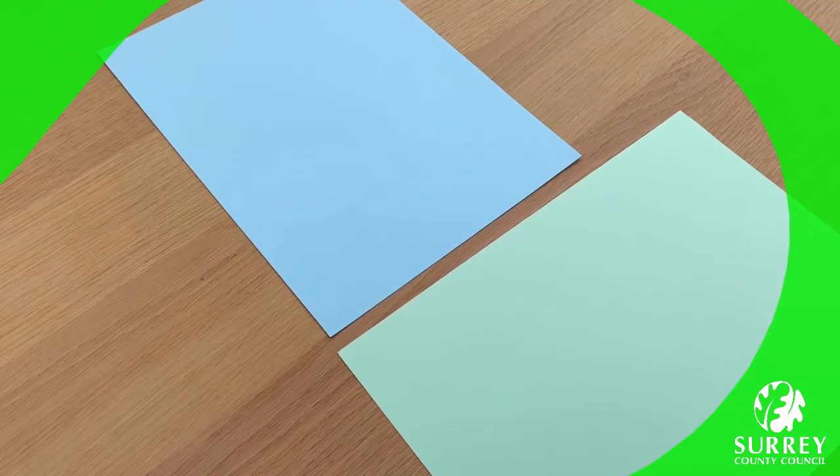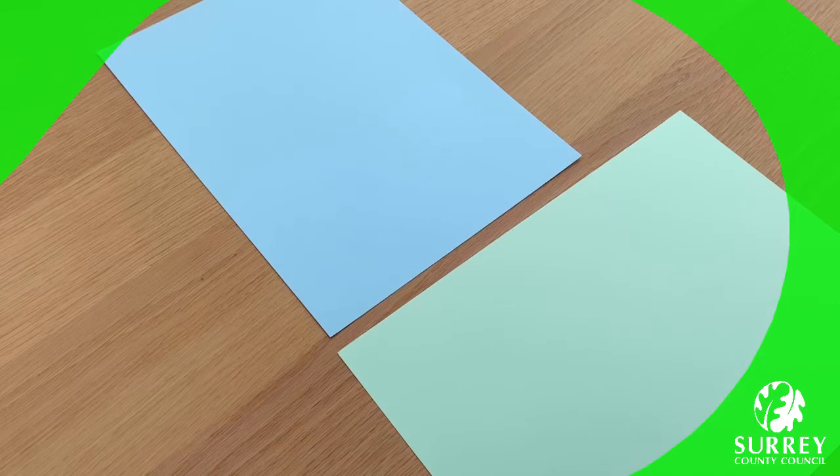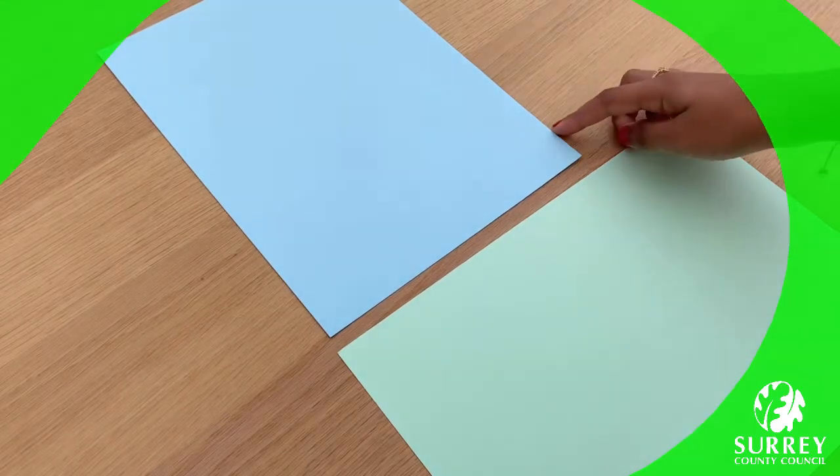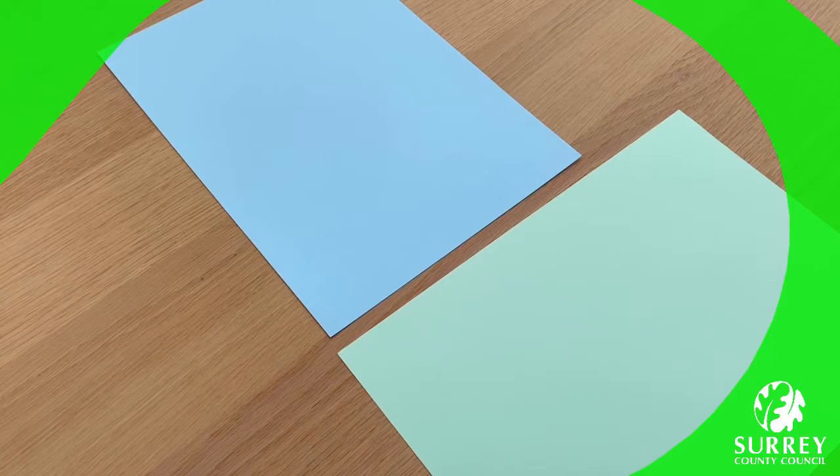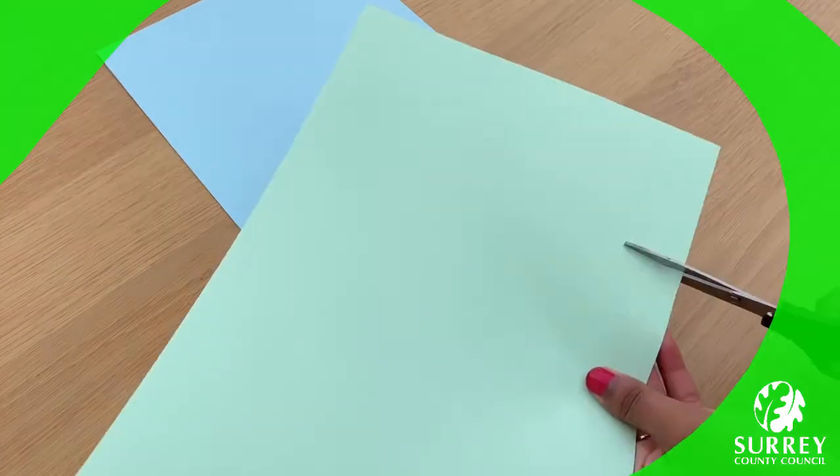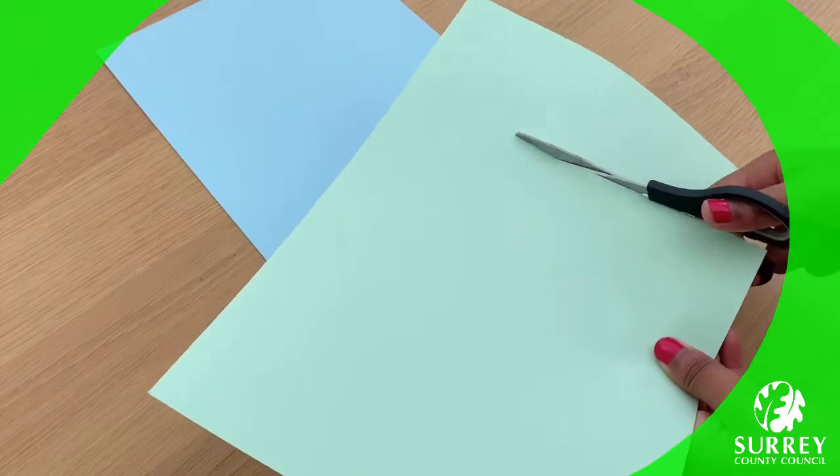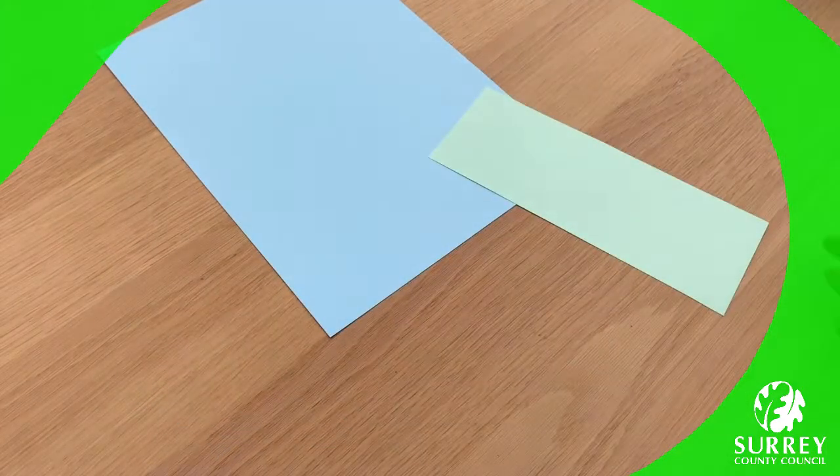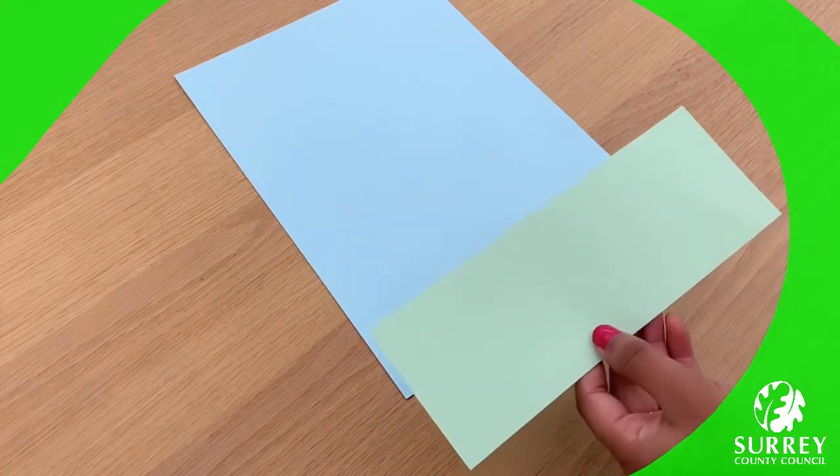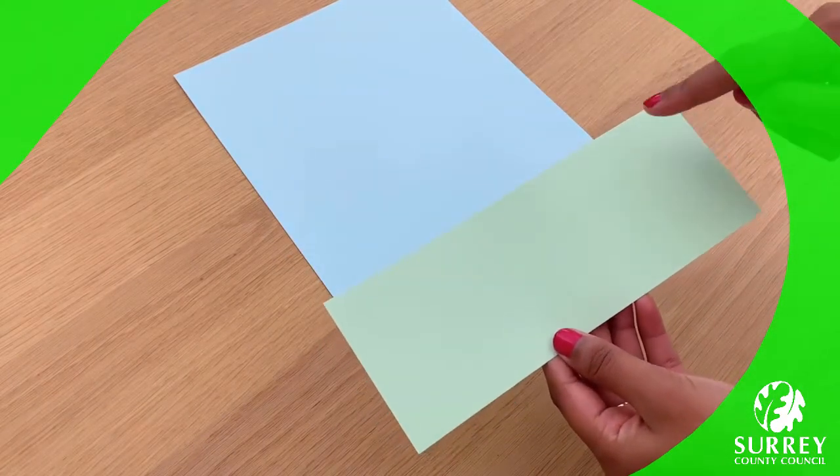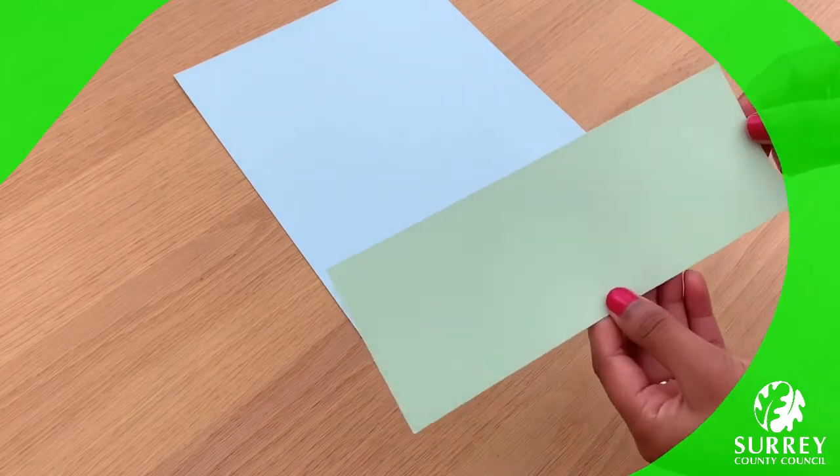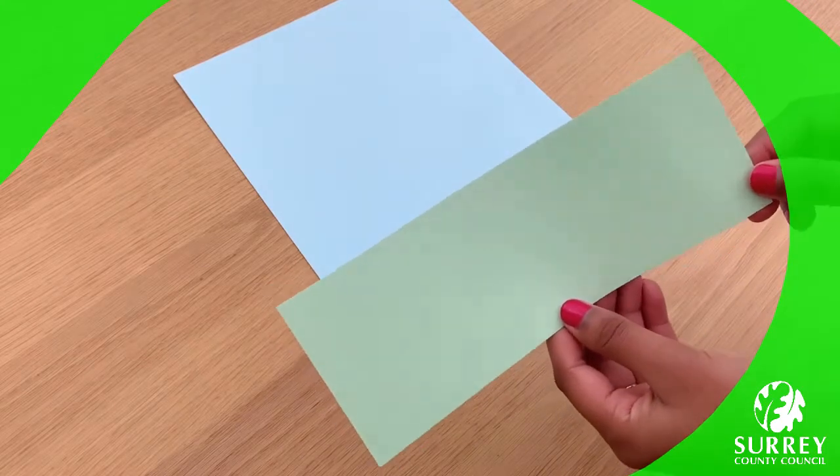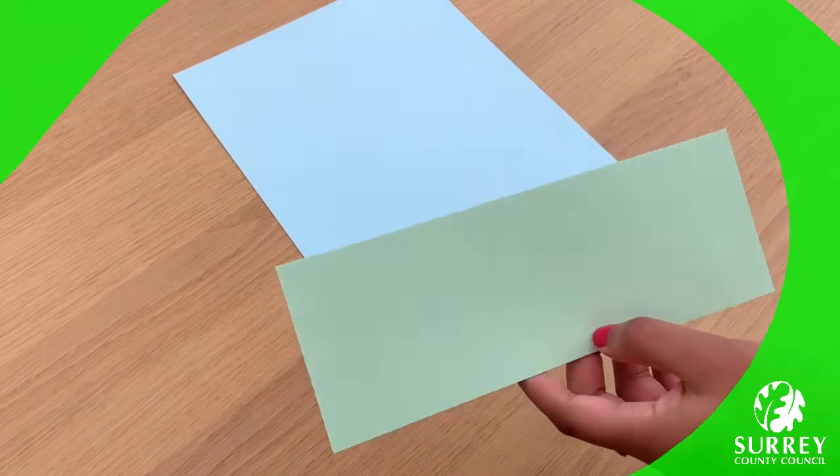First of all, cut out a rectangle shape from the green card so that we can make the grass. The green card should fit along the bottom of the blue card, so you can cut out however much you like. I'm going to roughly cut out a rectangle shape with my scissors. Now take some scissors and make some cuts three quarters of the way to the bottom of the green card. This step will really help us to make the grass look a little bit more 3D.